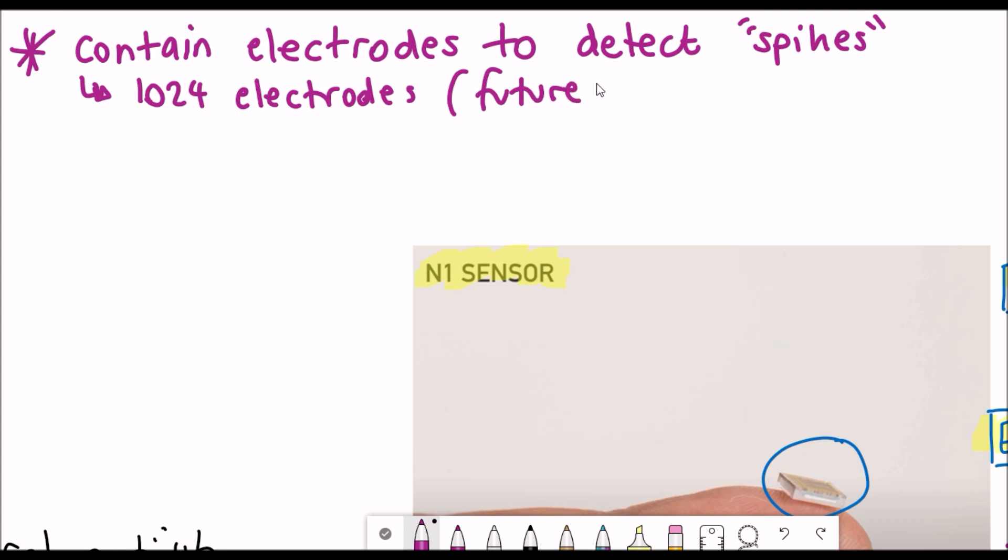In the future they hope to have up to 3072 with each electrode potentially being able to record thousands of neurons. The second question is how do you get these sensors into the patient?